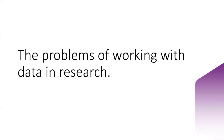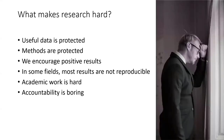What are some of the problems of working with data in research? Things which can make research hard include: useful data can be inaccessible, researchers are encouraged to protect their methods, media encourages positive results, results often cannot be repeated, academic work is mentally very difficult, and attempts at solving these problems with accountability processes are often very boring, low priority, and skipped by academics.